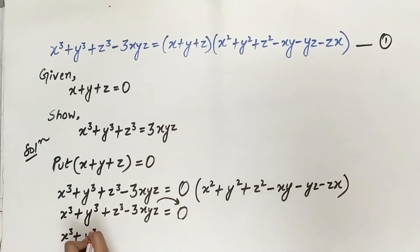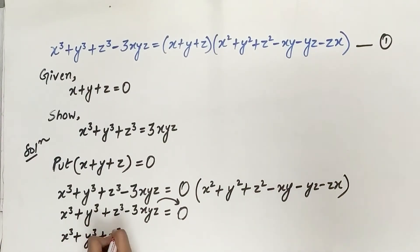So it's equal to x cubed plus y cubed plus z cubed is equal to 3xyz.